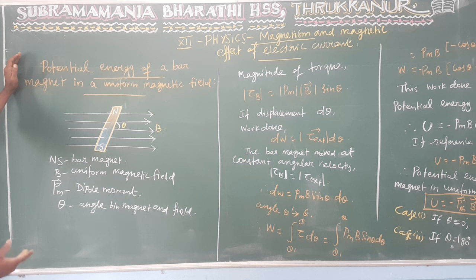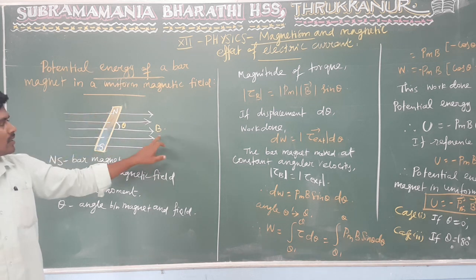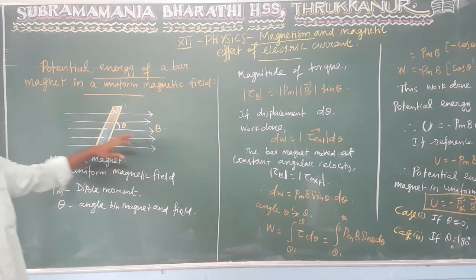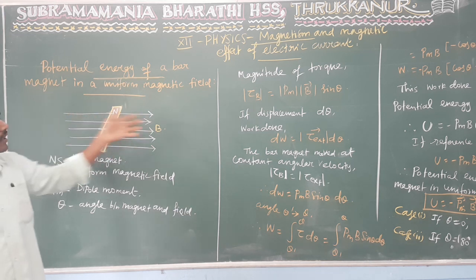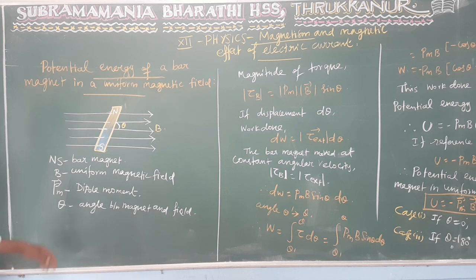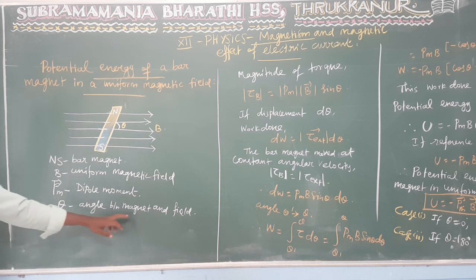The potential energy of a bar magnet in a uniform magnetic field. The parallel lines represent the uniform magnetic field, and this is the bar magnet. NS is the bar magnet, B is the uniform magnetic field, PM is the magnetic dipole moment, and theta is the angle between the magnet and the magnetic field lines.